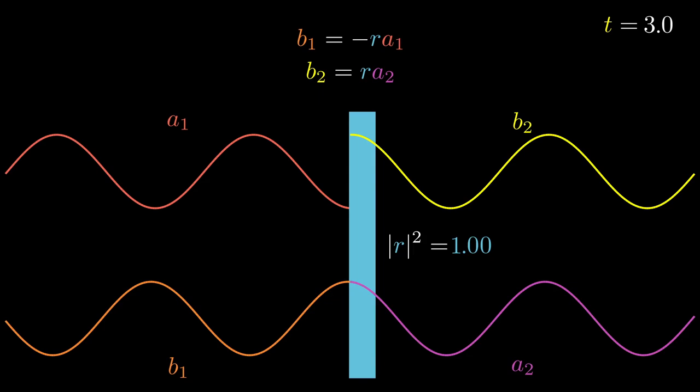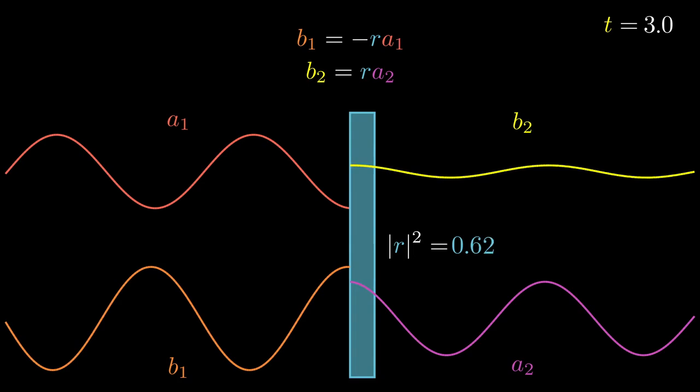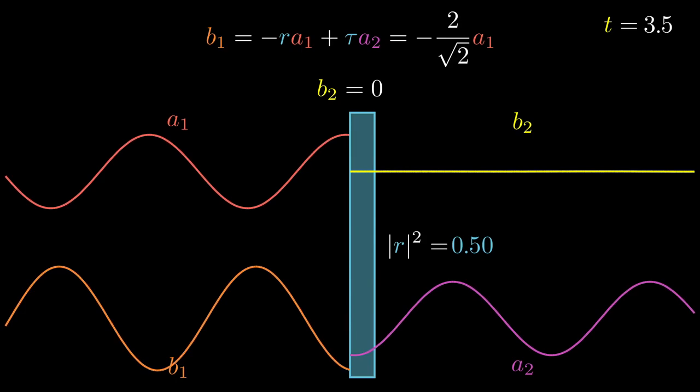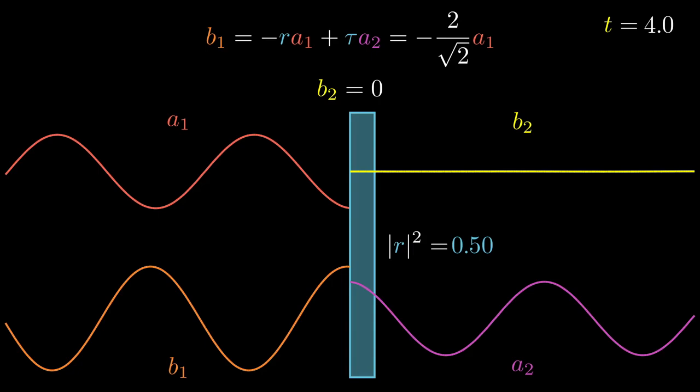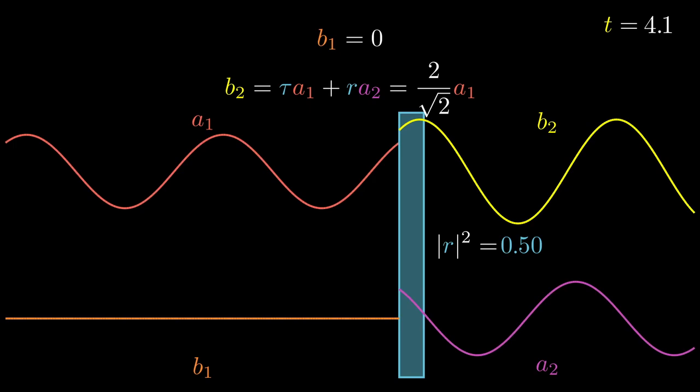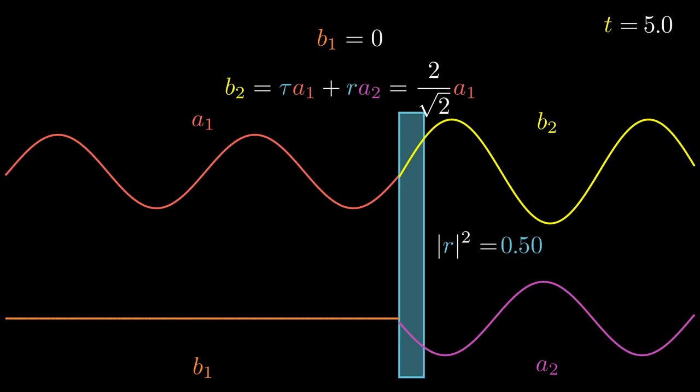Finally, we make the mirror half-reflective. We've made one output beam disappear entirely, while the other has been multiplied by square root of 2. Now let's move the mirror. Now V1 is equal to zero, and V2 is multiplied by square root of 2. And by moving further, we can recover the original situation.